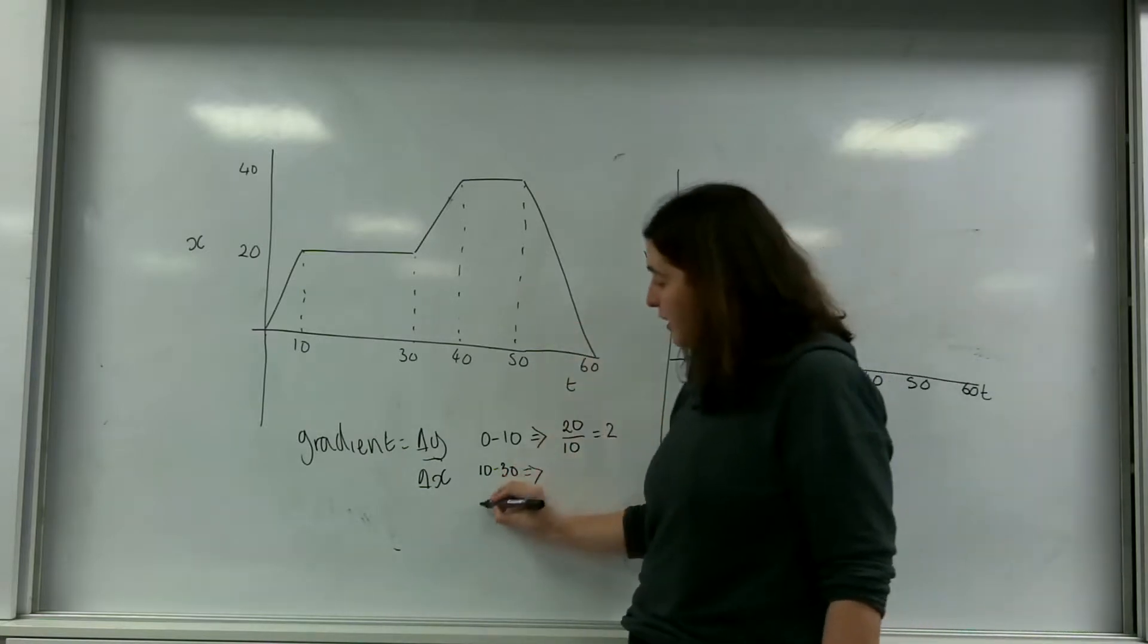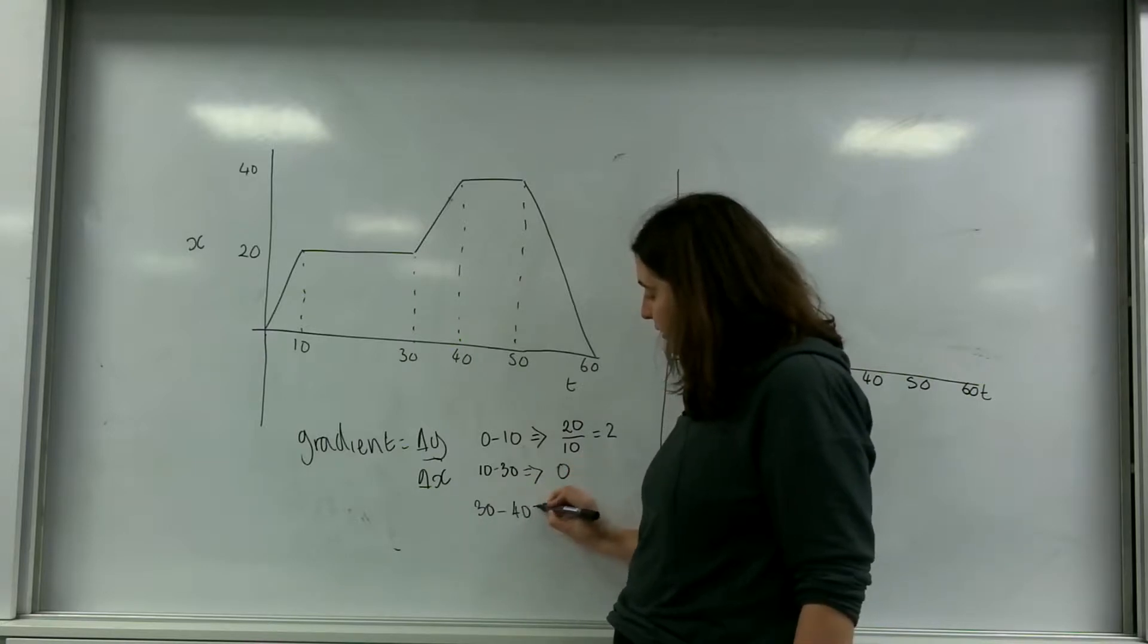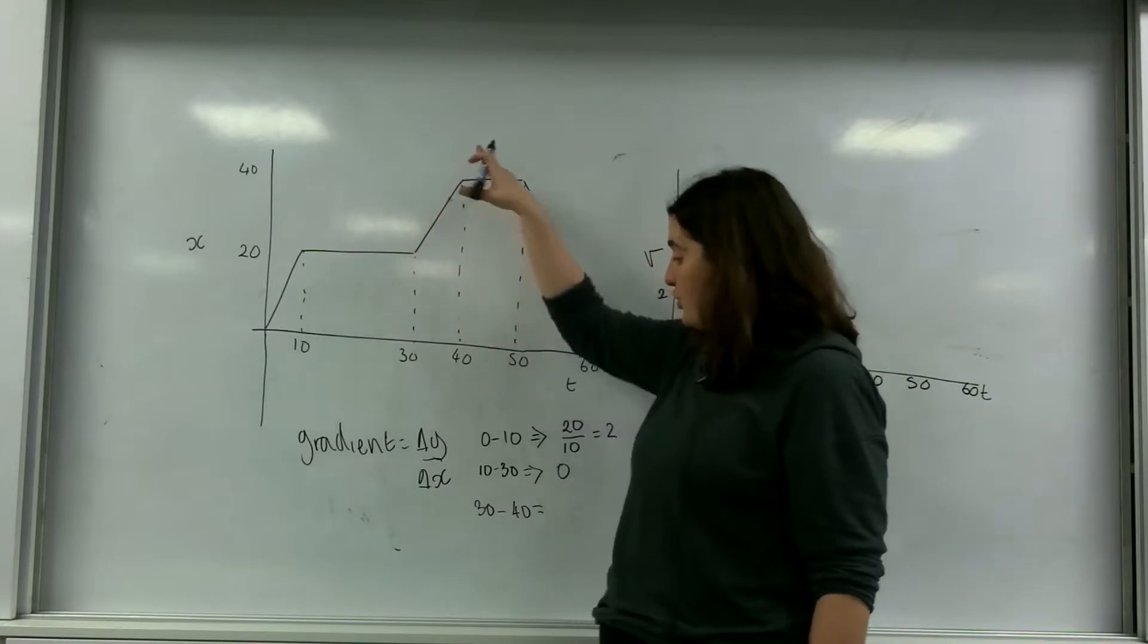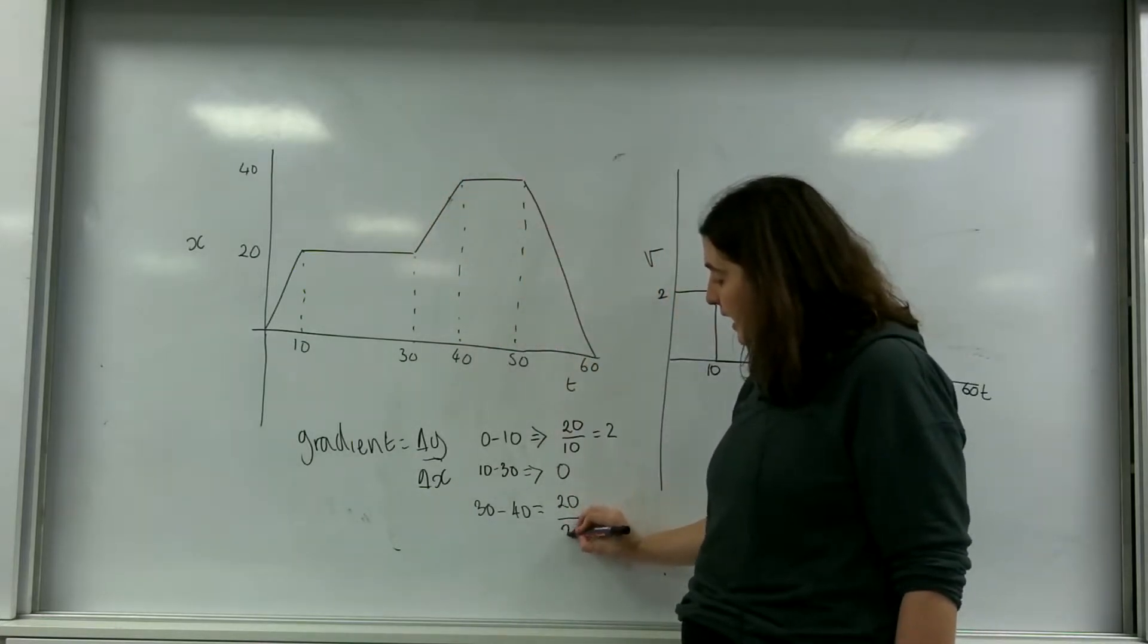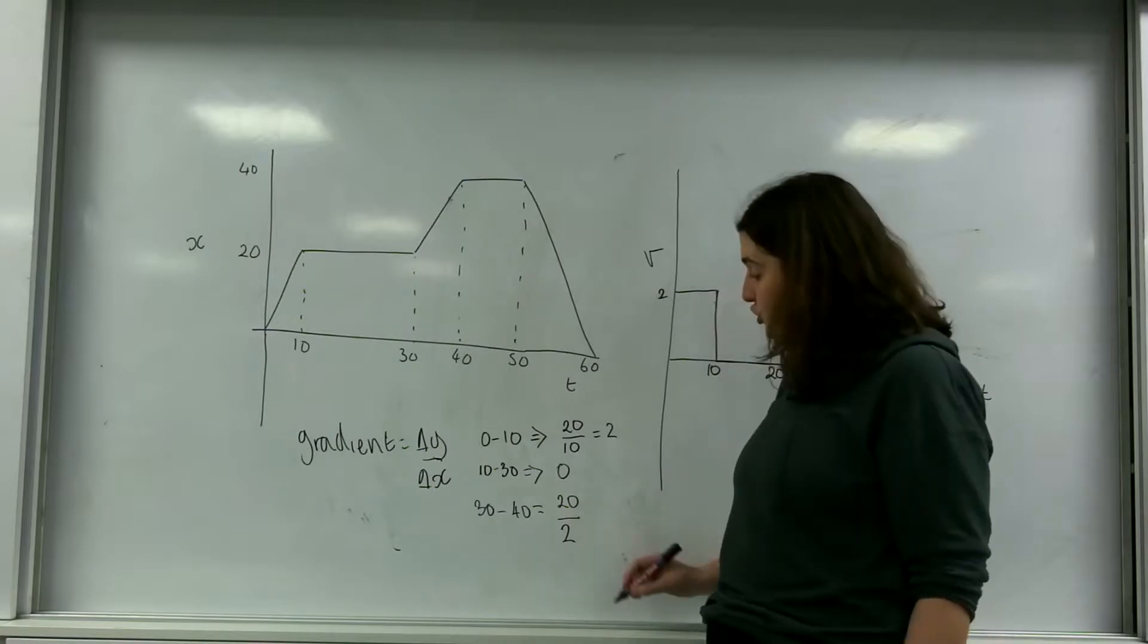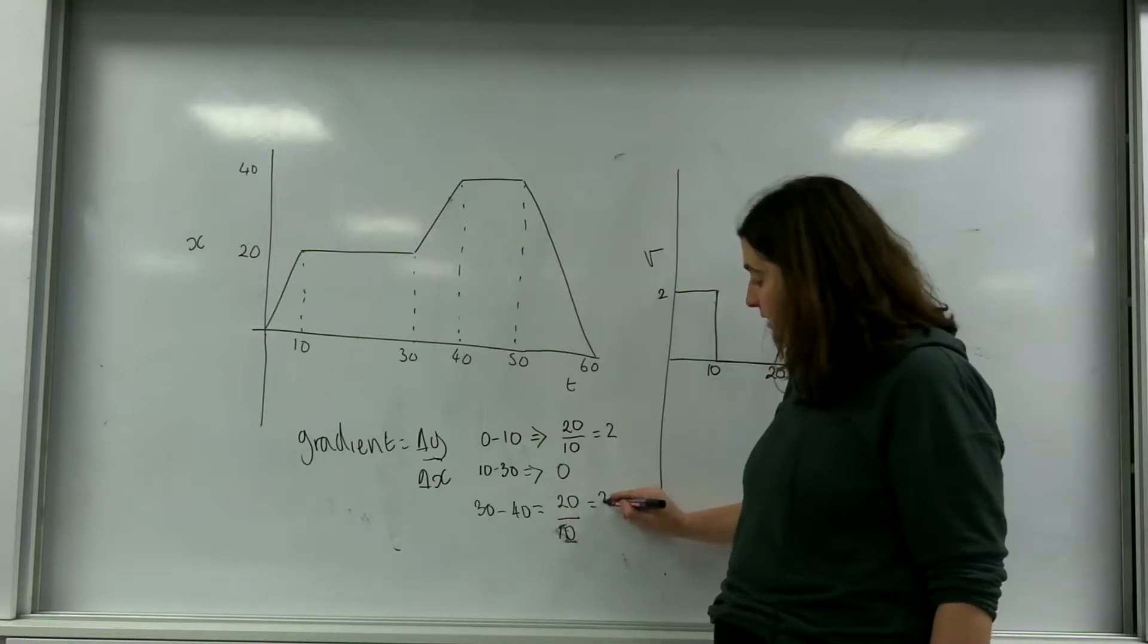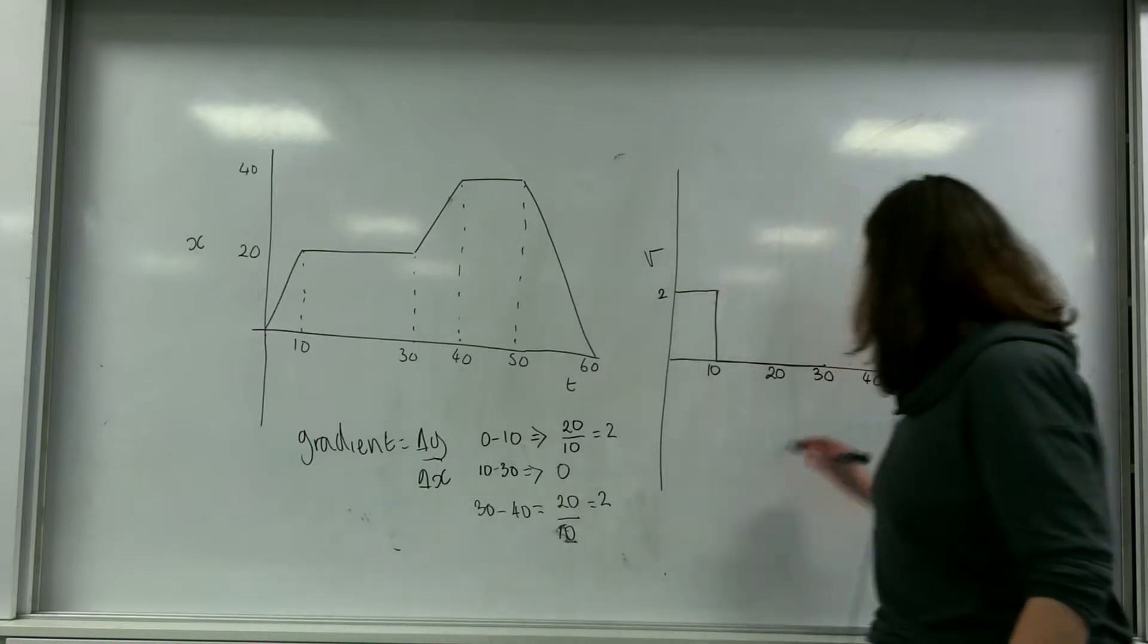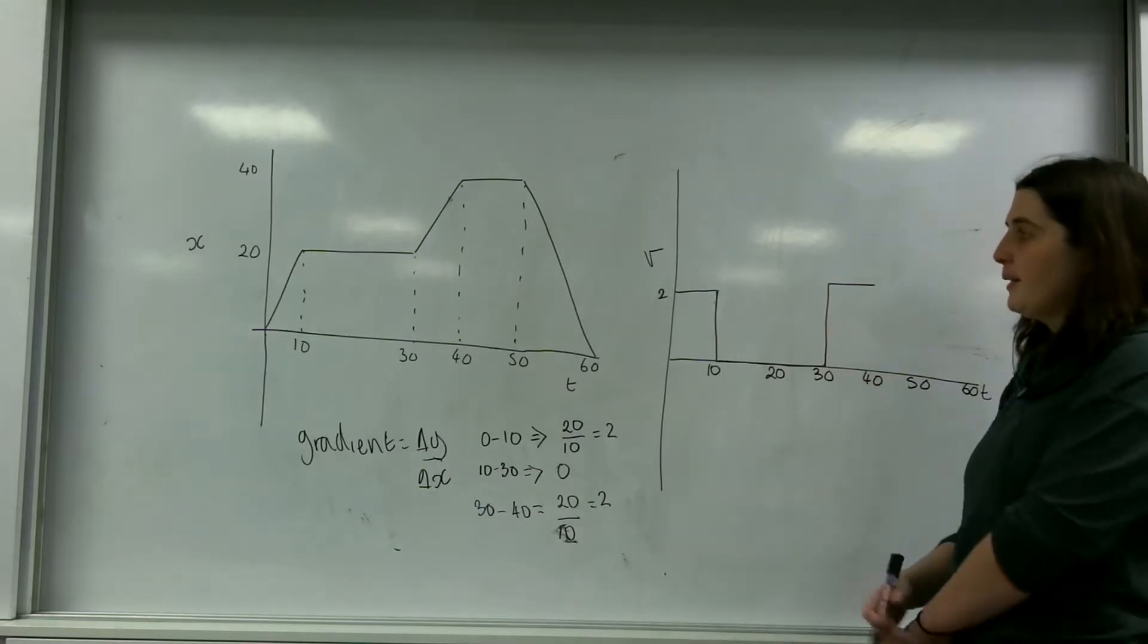So between 30 and 40, here I'm going from 20 to 40. So my change in y is 20 and my change in x is 10. So again this is 2. So between 30 and 40 I'll be at 2 again here.